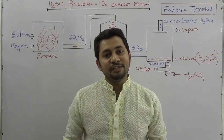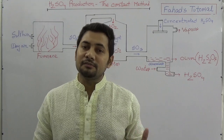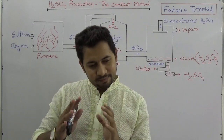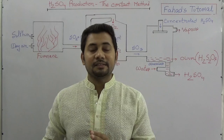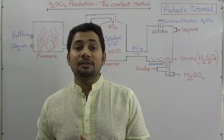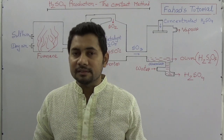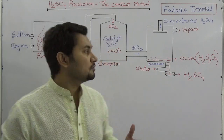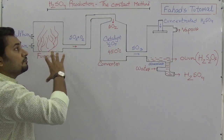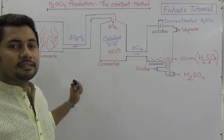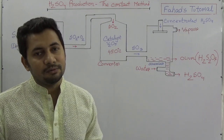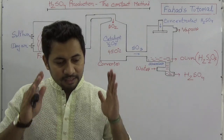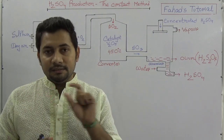Welcome to Fahad's tutorial. In this video I shall explain the production of sulfuric acid via the contact process. This concept is discussed under the chapter of minerals, specifically non-metal minerals. We already covered the Frasch process to extract sulfur, and now we need to know how sulfuric acid is produced. It is a widely used acid worldwide, which is why it is known as the king of acids. We are talking about H2SO4, and for that reason we need to understand the contact method properly.